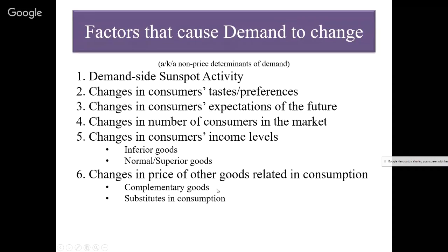With the prices of other goods related in consumption — two products A and B have a relationship in consumption if the price of product B causes the demand for product A, a different product, to shift left or right. Some products are totally unrelated in consumption. If the price of gasoline goes up or down, it has no impact on the demand for milk whatsoever — milk and gasoline have zero relationship in how the end users consume them.